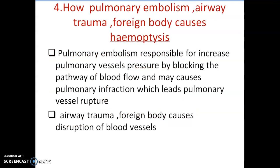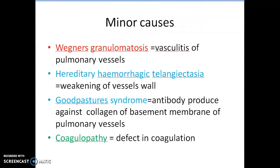Pulmonary embolism is responsible for increased pulmonary vessel pressure by blocking the pathway of blood flow, and may cause pulmonary infarction which leads to pulmonary vessel rupture and causes Haemoptysis. Aerotrauma and foreign body cause disruption of blood vessels and cause Haemoptysis. Wegener's granulomatosis produces Haemoptysis by vasculitis of the pulmonary vessel.